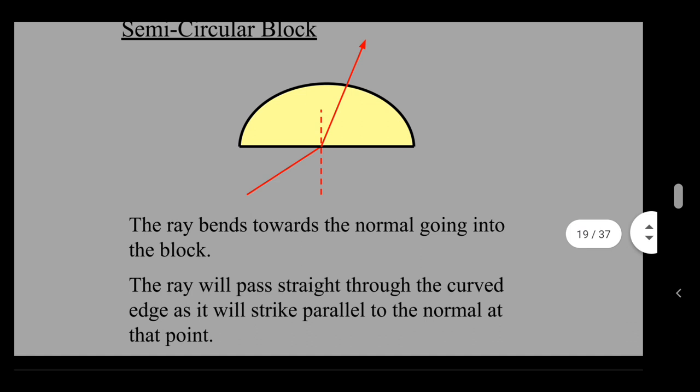And then for the semicircular block, the ray of light goes in, angle of incidence between the ray of light and the normal, and as it goes into the more dense medium, it becomes a smaller angle of refraction. And remember, because the ray of light is going at 90 degrees through the outer edge, it does not refract. So that's why it goes straight through there and doesn't refract when it gets to that point.